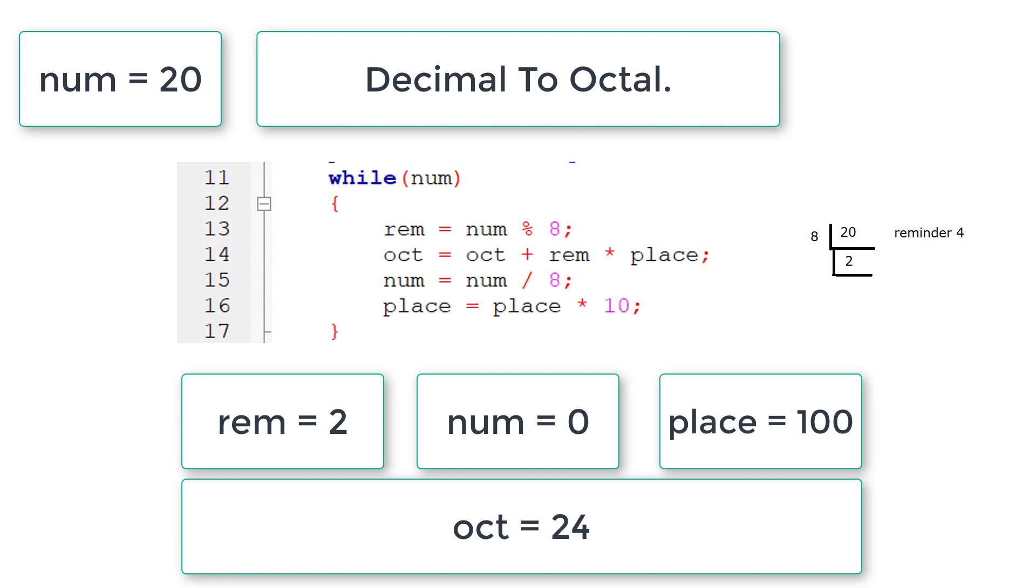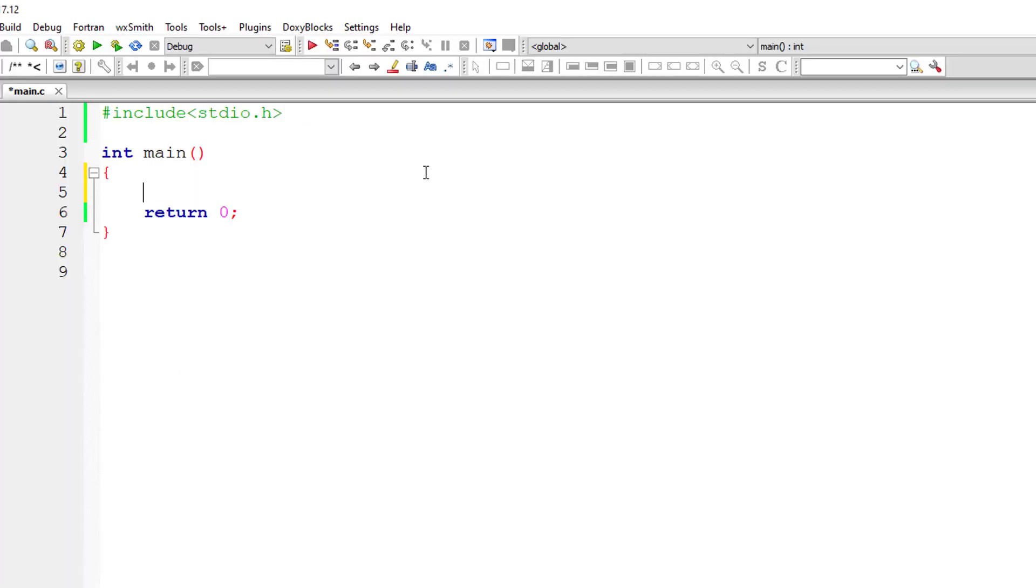Let's write the actual C program now. So I'll initialize variables. Octal equals 0, remainder equals 0, place equals 1. That is units place: units, tens, hundreds, thousands, etc. So place equals 1, which means it's in units place right now.